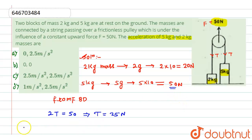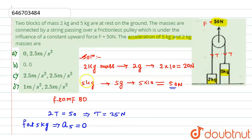For the 5kg mass, acceleration a5 equals zero. Now we need to find the acceleration for the 2kg mass. We apply Newton's second law and write the equation.